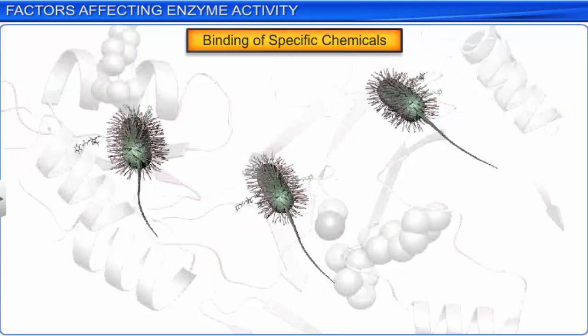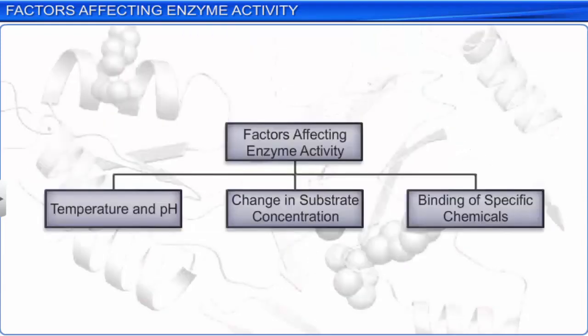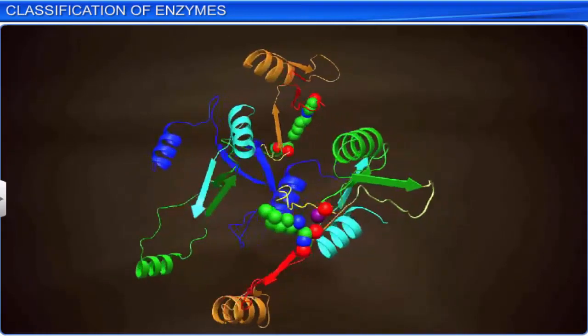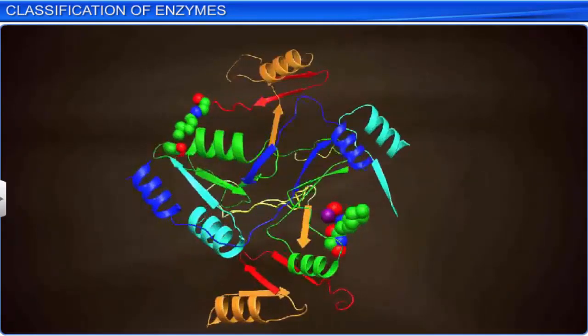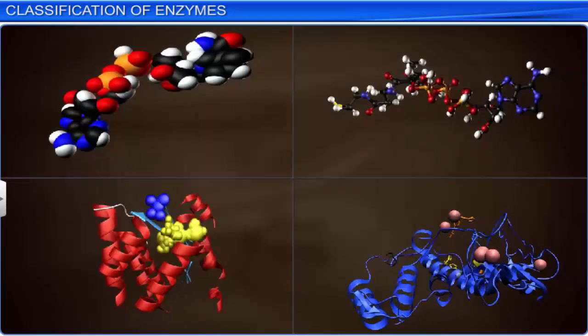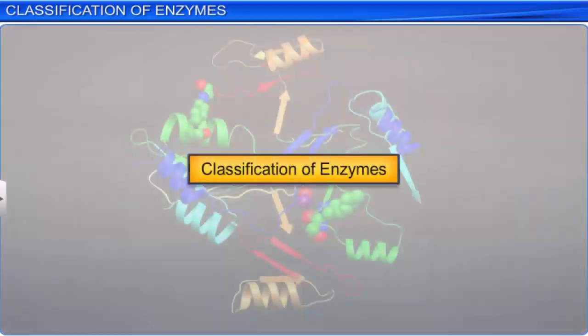Thus, enzyme activity depends on physical factors such as temperature and pH, and the chemical surroundings, such as substrate concentration and the binding of specific chemicals. Enzymes play a significant role by helping the various processes in a biological cell to take place at a significant rate. Scientists have discovered and studied numerous enzymes. Depending on the types of reactions they catalyze, enzymes have been divided into six classes.